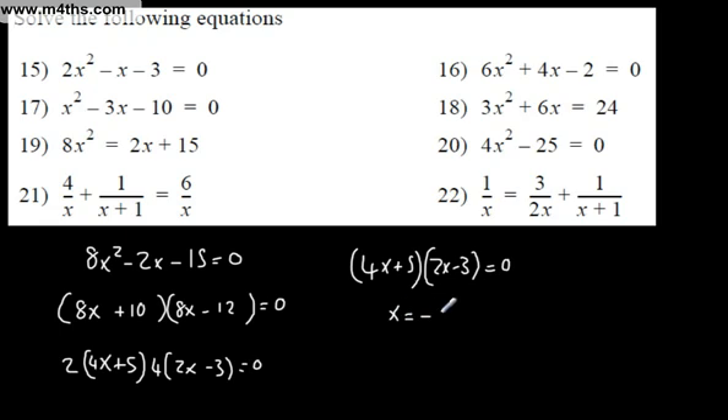We can take a common factor of 2 out of that one to give us x + 5. We can take a common factor of 4 out of that one, which will give us 2x. Take a common factor of 4 out - that's going to give us 2x - 3. Let's just check I've done that right. If you're unsure, just expand it back out: 8x² - 12x + 10x - 15. That is correct. So 4x + 5 = 0, x = -5/4. Or 2x - 3 = 0, x = positive 3/2. Those are your two solutions.